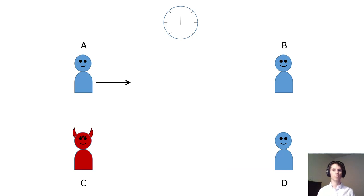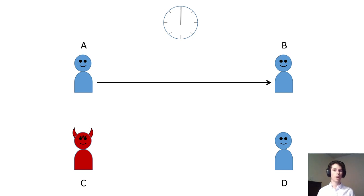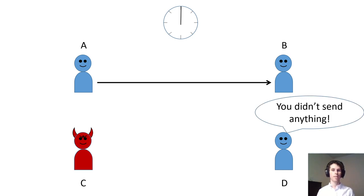In the synchronous model, all messages are guaranteed to arrive within a fixed amount of time. If party D does not receive party C's message on time, then it knows that party C never sent the message in the first place. However, even in the classical setting, real-world networks do not provide this guarantee. Even worse, synchronous protocols often fail catastrophically as soon as even one message is delayed.